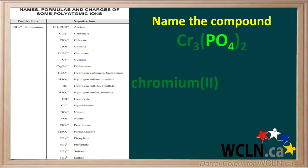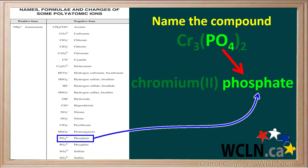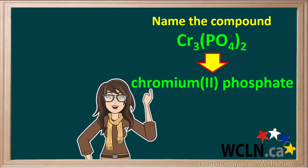The anion in this compound, PO₄, is the polyatomic ion called phosphate. So the second part of the name is phosphate. Remember, we don't add prefixes or Roman numerals to the names of polyatomic ions, so the name remains phosphate, the same as it is on the ion table. The final name of this compound is chromium(II) phosphate.